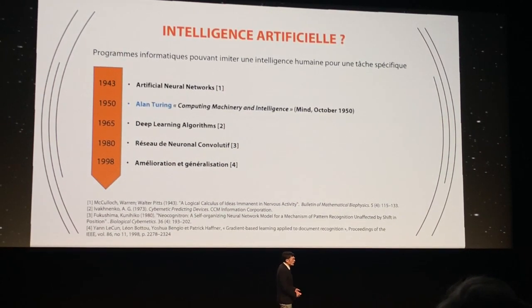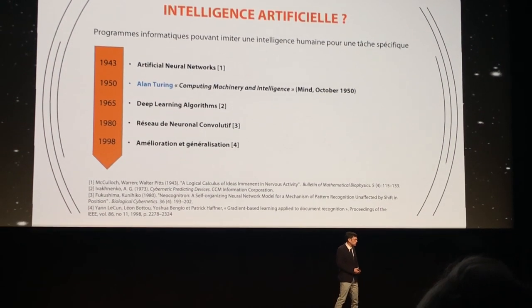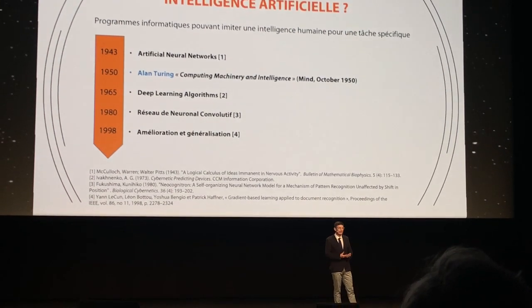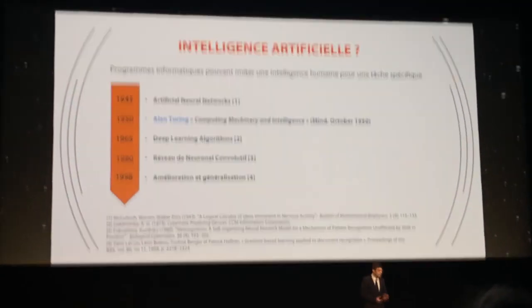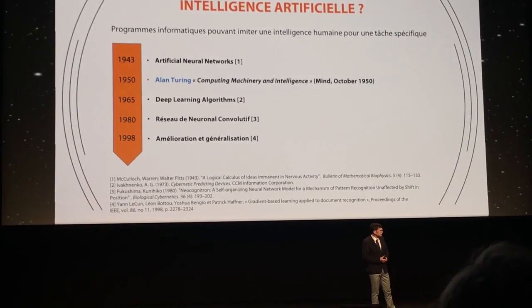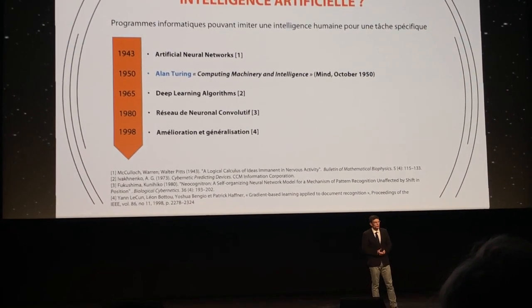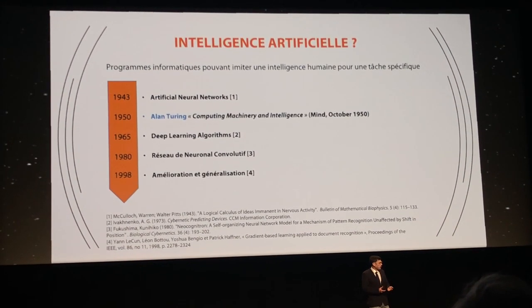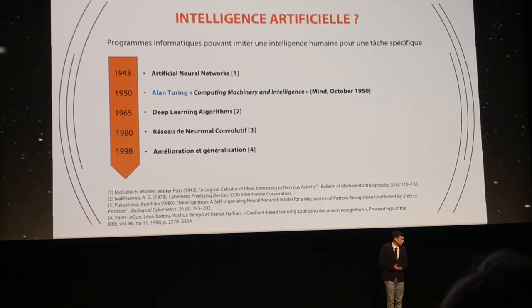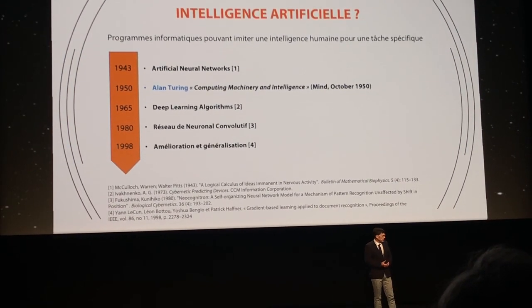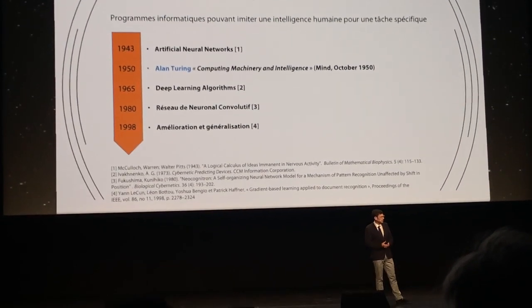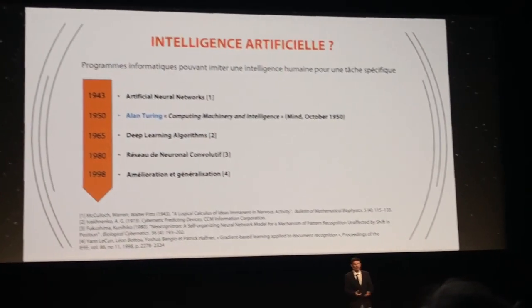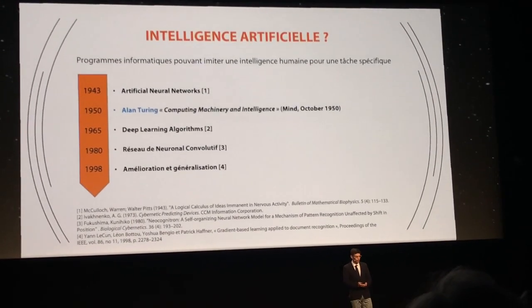The first bricks of this building were laid in 1943 by McCulloch and Pitts, who for the first time modelled artificial neural networks. But the term 'artificial intelligence' only appeared in 1950 in a paper by Alan Turing. This was followed by developments such as deep learning in 1965, convolutional neural networks in 1980, and finally in 1998, in a paper by Yann LeCun — a French researcher now at Facebook — who improved and generalized all these concepts. We are currently using the evolution of that work.